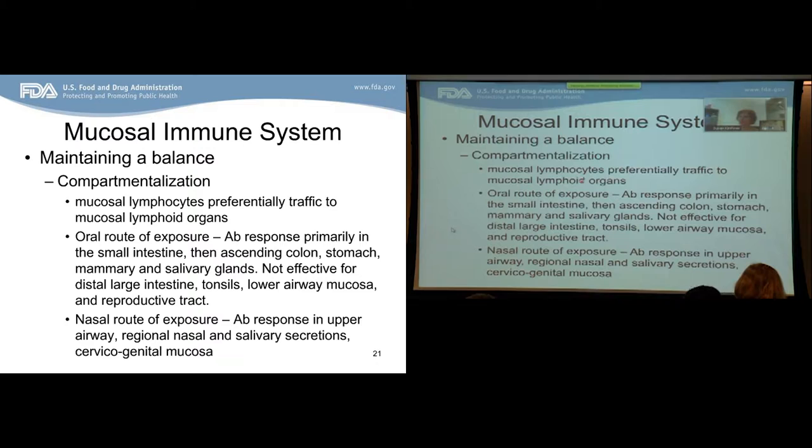The mucosal immune system is also highly compartmentalized, and this compartmentalization helps it maintain balance between wanted immune responses to infectious agents and unwanted responses to commensal bacteria and food antigens. Mucosal lymphocytes are preferentially trafficked to mucosal lymphoid organs. For example, with oral exposure, the antibody response is primarily in the small intestine, ascending colon, stomach, and mammary and salivary glands. With nasal exposure, you primarily see responses in the upper airway, nasal secretions, and cervicovaginal mucosa.